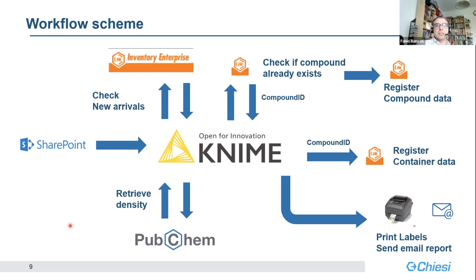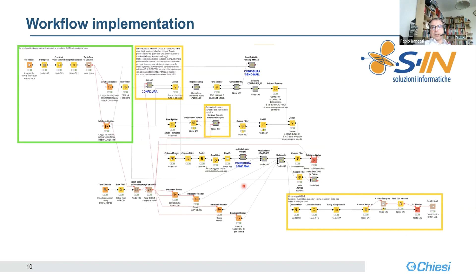This is the logic of our workflow. SharePoint and KNIME need to retrieve data from SharePoint, check all the new arrivals, check if the compound already exists in our database, and in case it doesn't, register the information related to the single container. Retrieve the density from PubChem and at the end print labels for all the containers and send a report to the reagent management group. This is the real workflow that we have implemented.